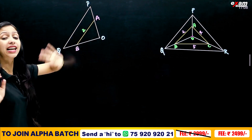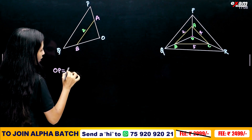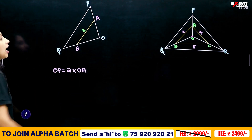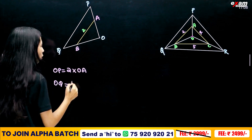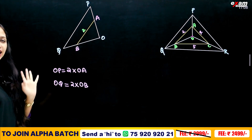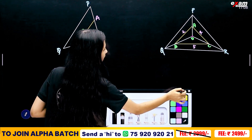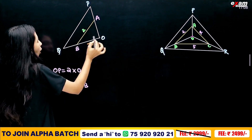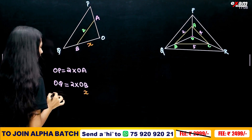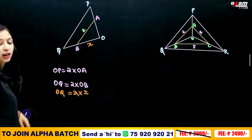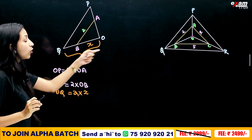Here is OA. If OA is x, then OQ is twice OA, so OQ equals 2x.